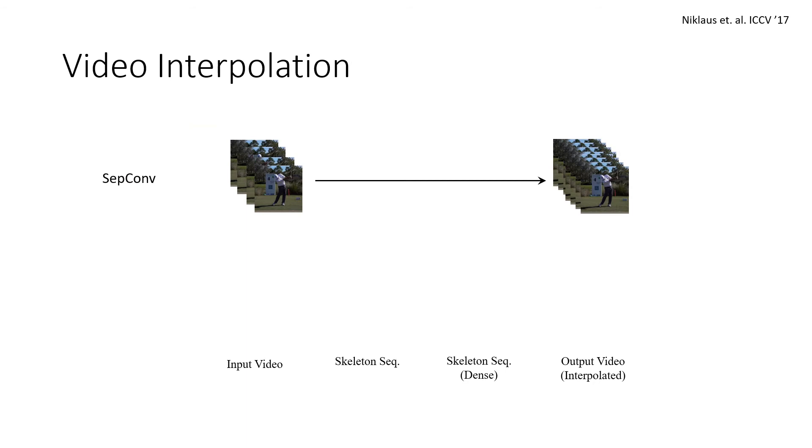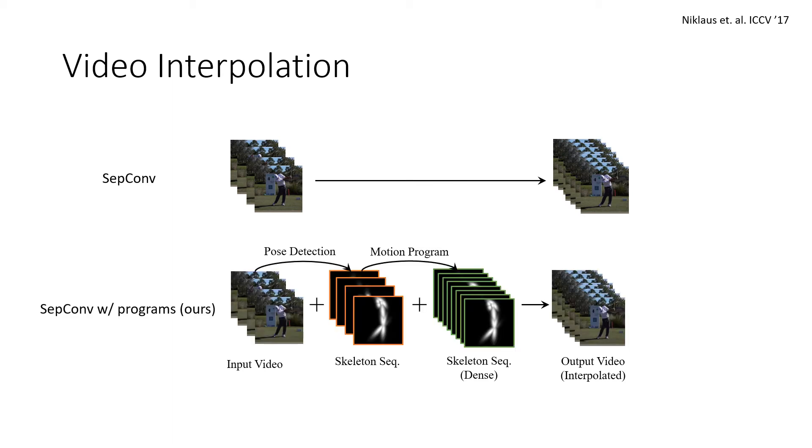We also incorporate motion programs into video interpolation pipelines. SepConv is a standard video interpolation model which uses the left and right frame to predict the middle frame. We train a variant of SepConv where along with the input images, we pass in the input skeleton heatmap as well as target skeleton heatmap. At test time, we supply the target heatmap information via motion programs.